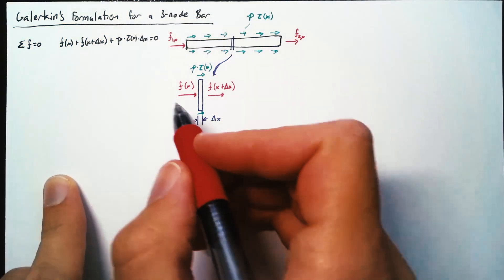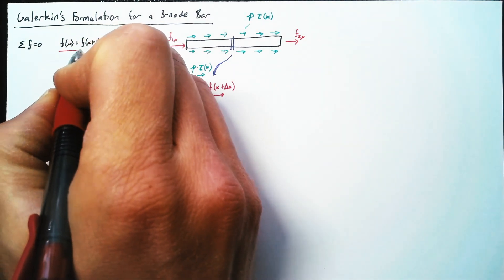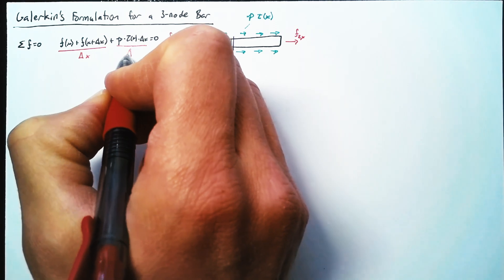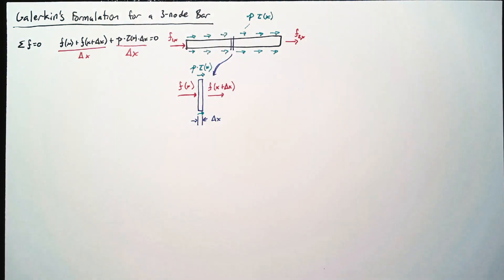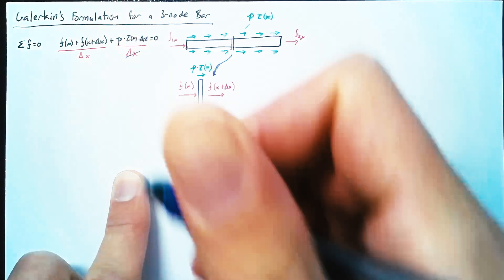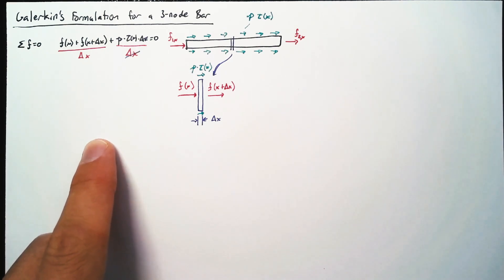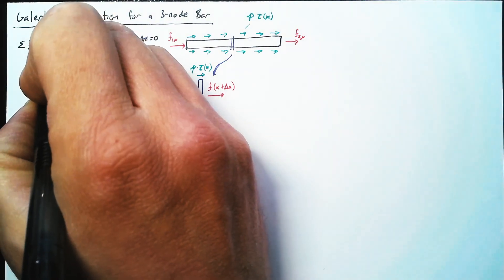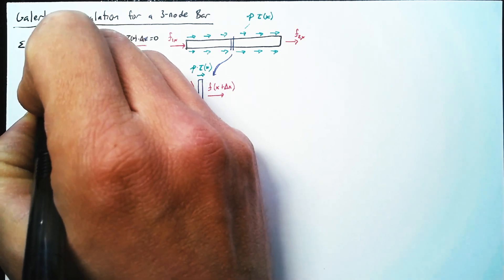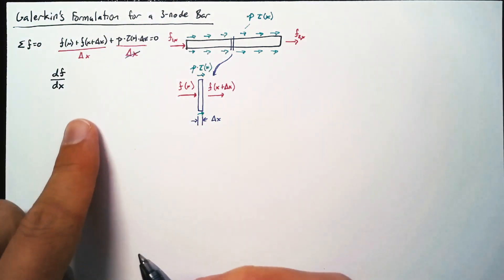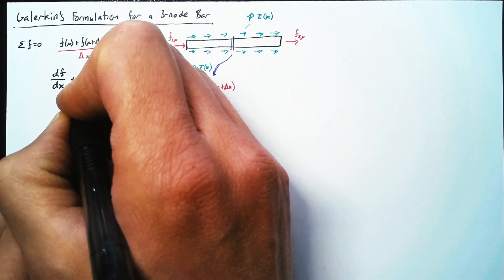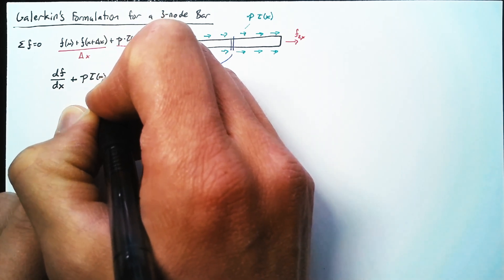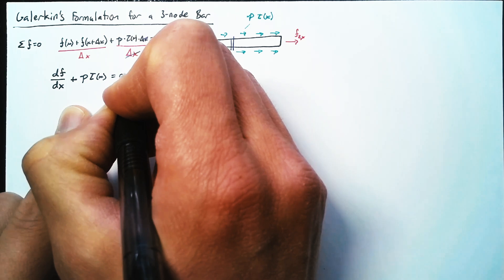In order to turn this into a differential equation, we divide the entire equation through by delta x, and then we can cancel out the delta x terms, while the first term just becomes a derivative of f with respect to x. So this becomes df/dx plus the perimeter times the shear stress equals zero.